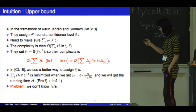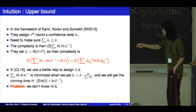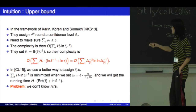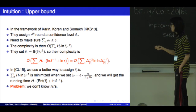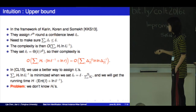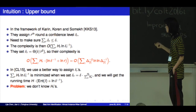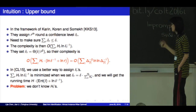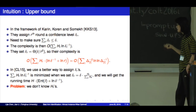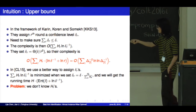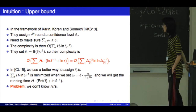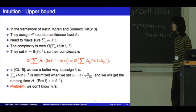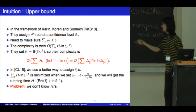But actually, if we can minimize this term by setting delta_r to be delta times h_r over the sum of h, then we can get a better running time. The problem is that we don't know the h_r's.